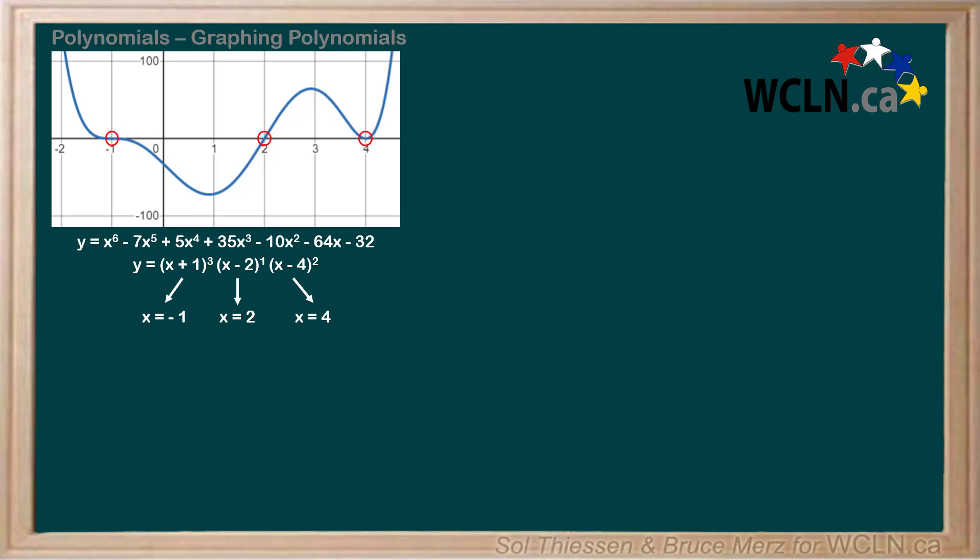Now I want you to closely examine the roots on the graph. Notice how the plot behaves differently around each root? This has to do with a term known as multiplicity. Multiplicity refers to the number of times a factor and its corresponding root are repeated.